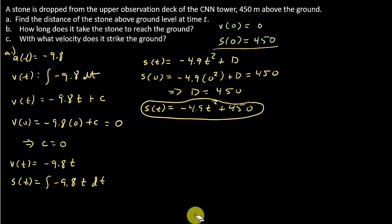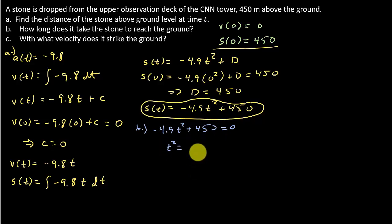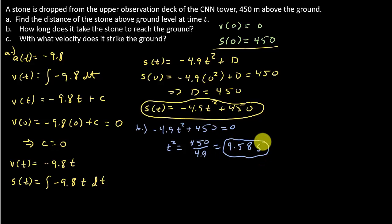For part b, it wants to know how long it takes the stone to reach the ground. That's when the height is zero, so I set the position function equal to zero: -4.9t² + 450 = 0. Solving, t² = 450/4.9, which gives t ≈ 9.58 seconds. Using the square root property we get plus or minus, but we only use the positive value, so that's how long it takes the stone to hit the ground.